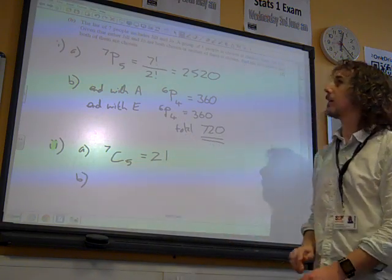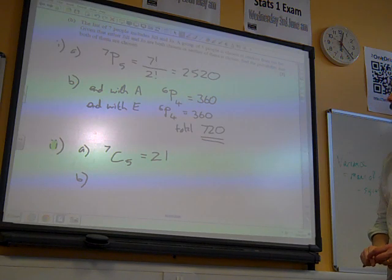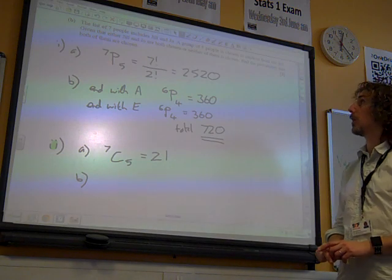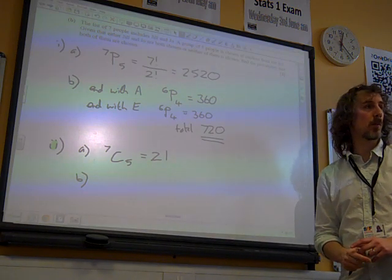Part B, the list of seven people includes Jill and Joe. A group of five people is chosen at random from the list. Given that either Jill and Joe are both chosen, or neither of them is chosen, find the probability that both of them are chosen.